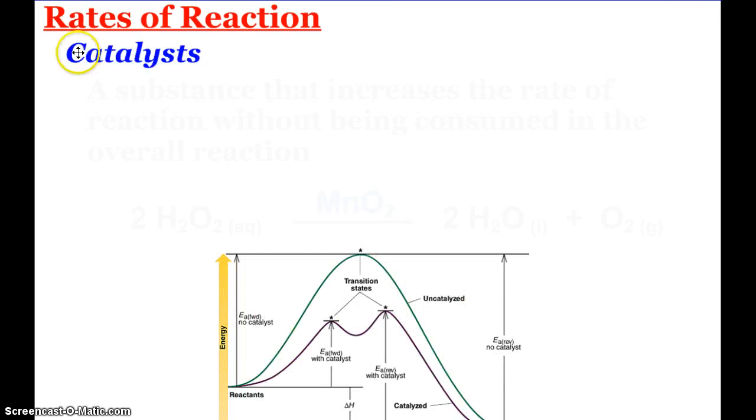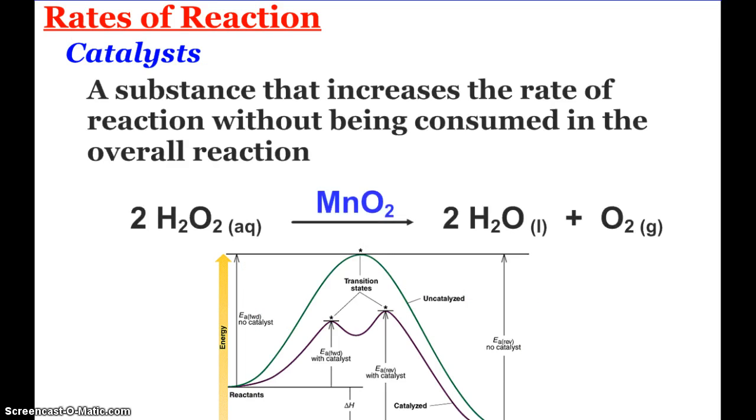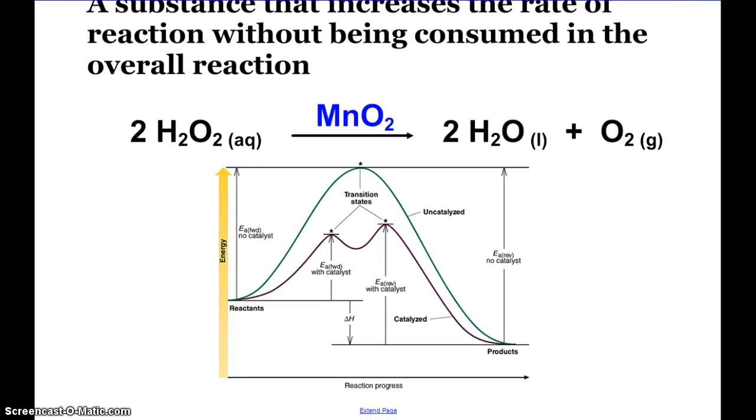Last, we're going to look at catalysts. I'm sure you've heard about these before. They are substances that increase the rate of a reaction without actually being consumed in the overall reaction. Here you see the decomposition of hydrogen peroxide. One of the catalysts that can speed that up is light, which is why hydrogen peroxide is typically stored in a brown, dark container. But also this manganese dioxide, MnO2. So it is written above the arrow showing that it is a catalyst.